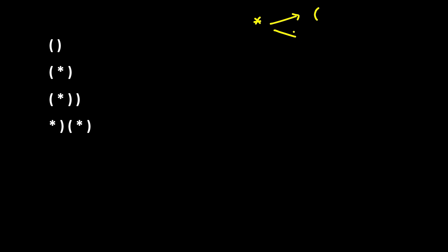The asterisk can take three values: you can convert it to an opening bracket, a closing bracket, or you can just ignore it — treat it as an empty string with no effect. That conversion is done based on which bracket is required to make the string balanced.